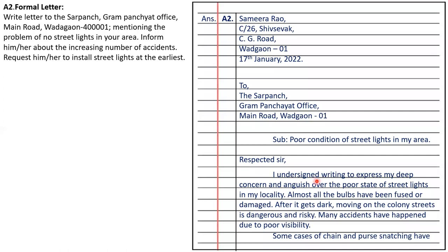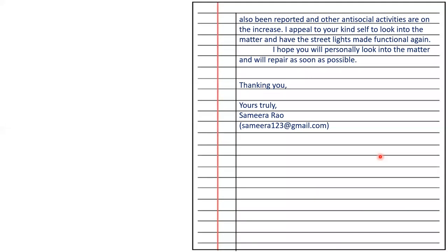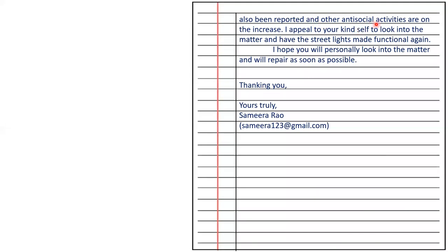Respected Sir, I am writing to express my deep concern and anguish over the poor state of street lights in my locality. Almost all the bulbs have been fused or damaged. After dark, moving on the colony streets is dangerous and risky. Many accidents have happened due to poor visibility. Cases of chain snatching and other anti-social activities are on the increase. I appeal to your kind self to look into the matter and have the street lights made functional again. I hope you will personally look into the matter and repair them as soon as possible. Thanking you, yours truly, Samira Rao.